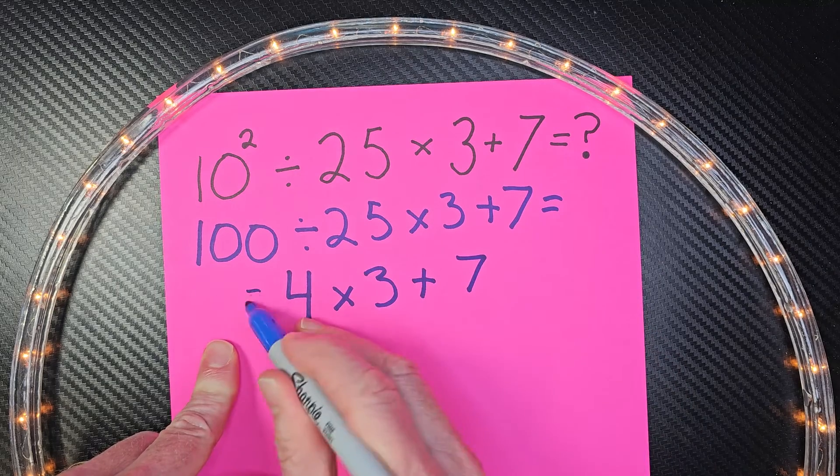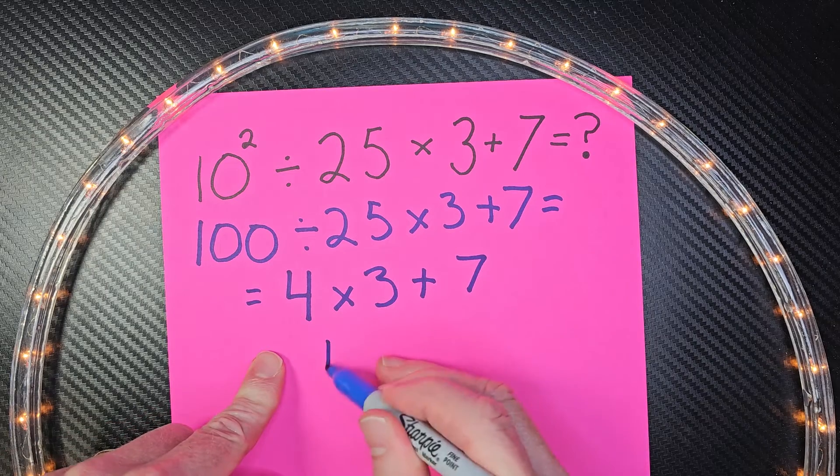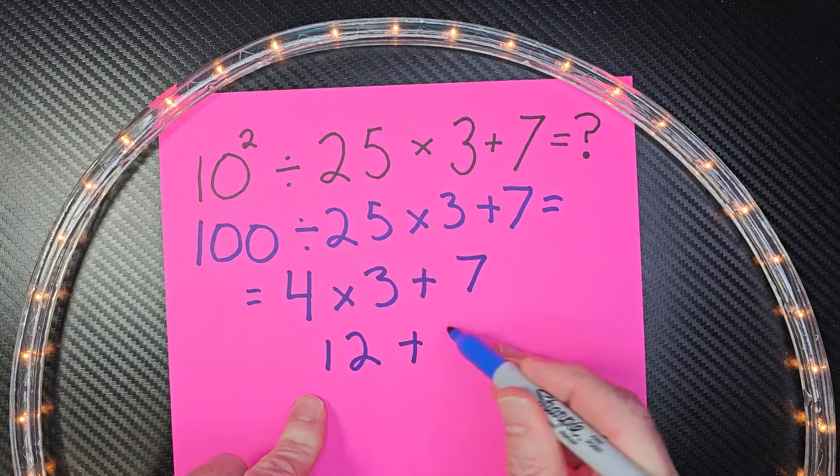Let's continue on. 4 times 3 equals 12, and then plus 7.